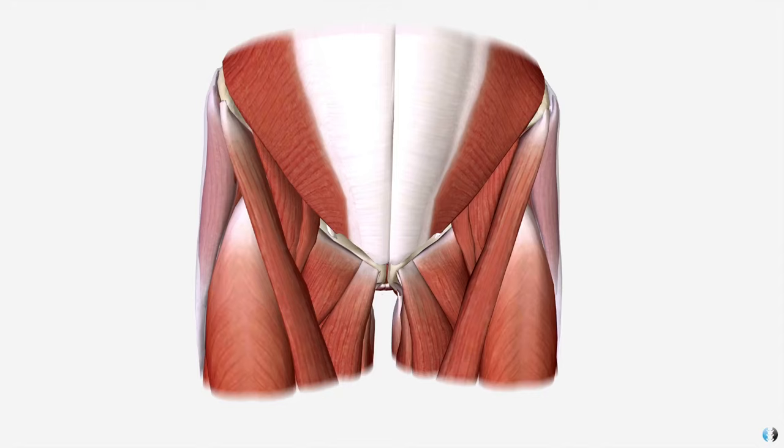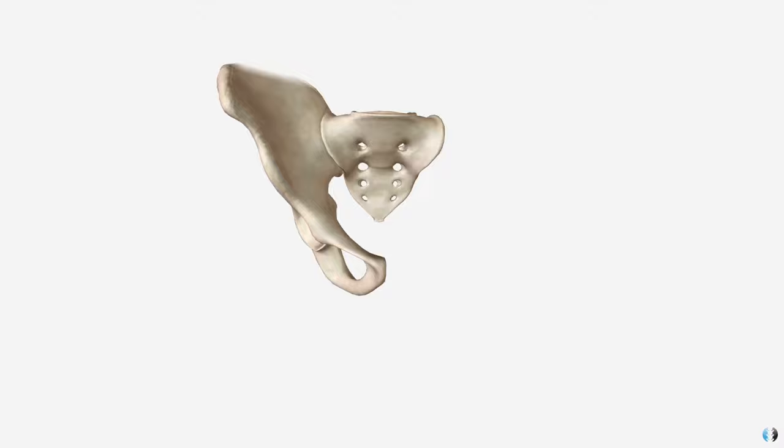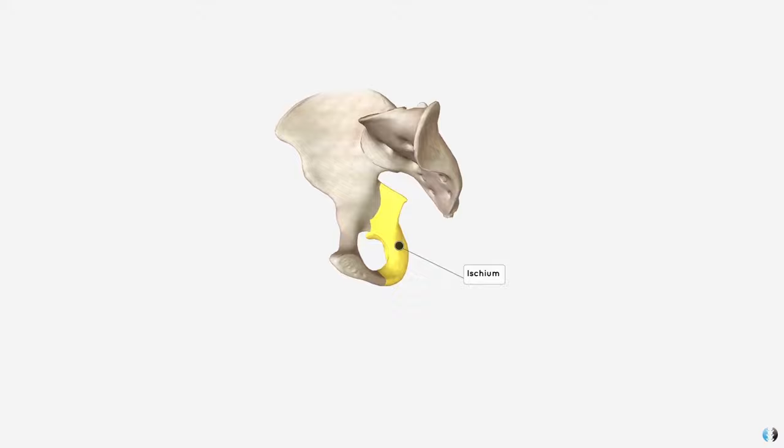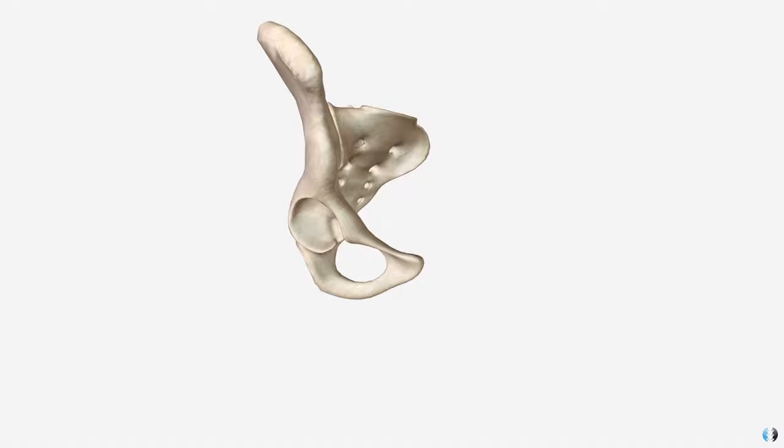So first of all, let's look at the anatomy of the pelvis. The pelvis can be split into three distinct regions: the ilium bone, the ischium bone, and the pubis bone. Now the pubis can be further broken down into the superior ramus, the body of the pubis, and the inferior ramus, which is where the word rami comes from.